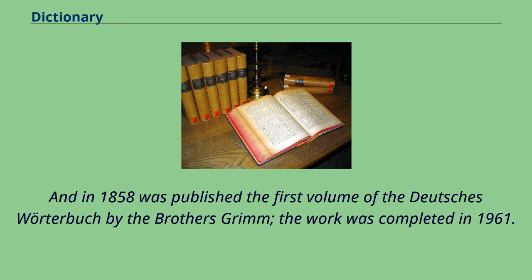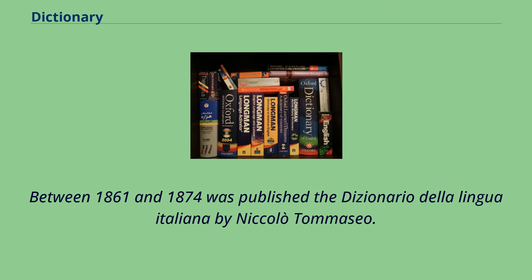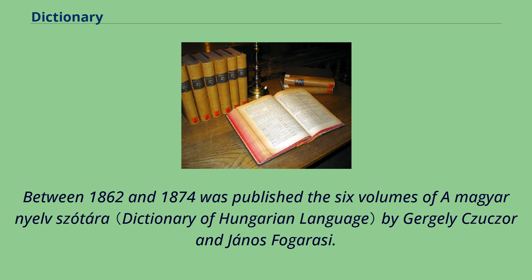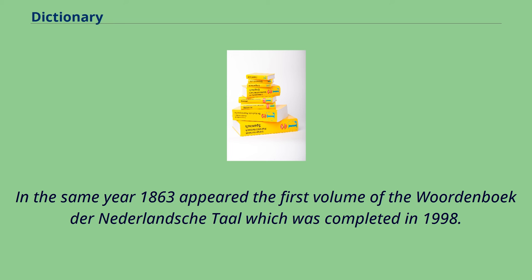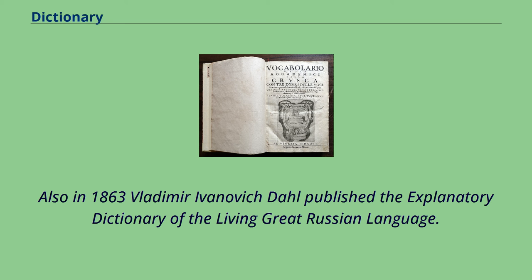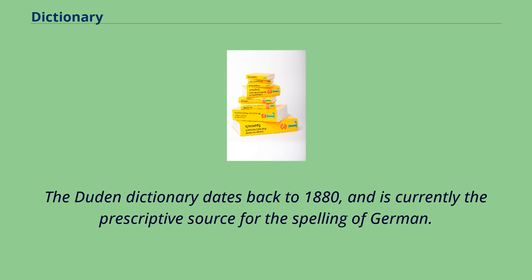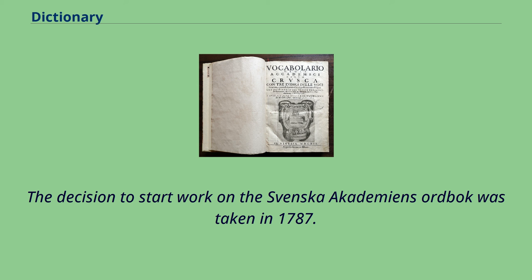Between 1861 and 1874 was published the Dizionario della Lingua Italiana by Nicola Tommaseo. Between 1862 and 1874 was published the six volumes of A Magyar Nyelv Szótára by György Czuczor and János Fogarasi. Émile Littré published the Dictionnaire de la Langue Française between 1863 and 1872. In 1863 appeared the first volume of the Woordenboek der Nederlandsche Taal, which was completed in 1998. Also in 1863, Vladimir Ivanovich Dal published the Explanatory Dictionary of the Living Great Russian Language. The Duden Dictionary dates back to 1880 and is currently the prescriptive source for the spelling of German.